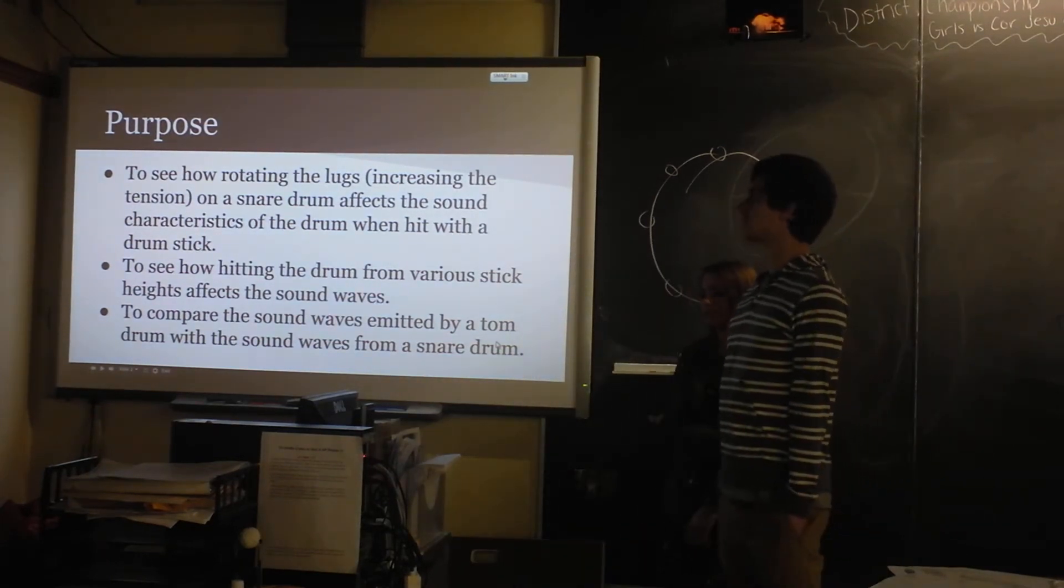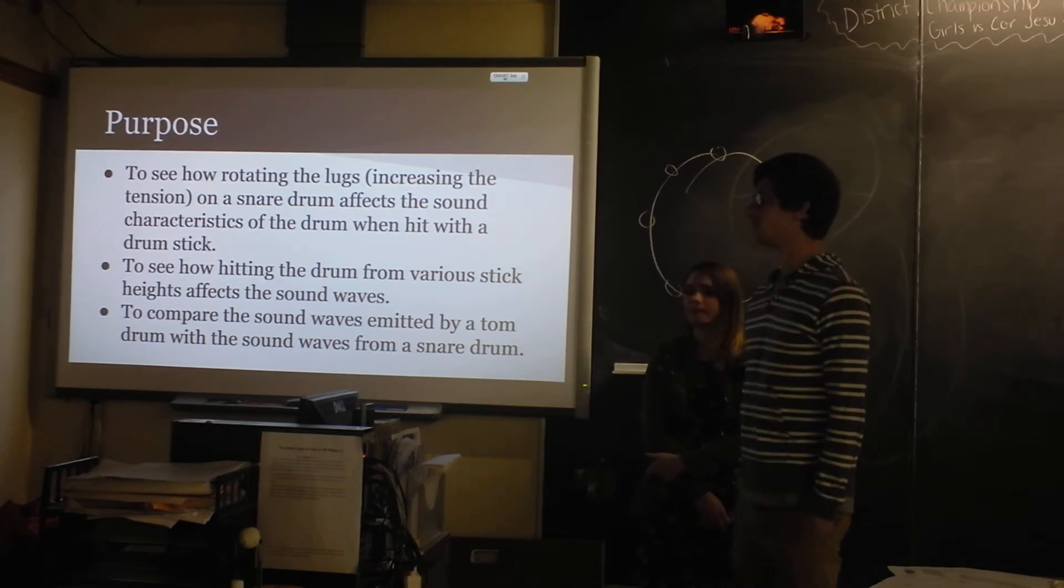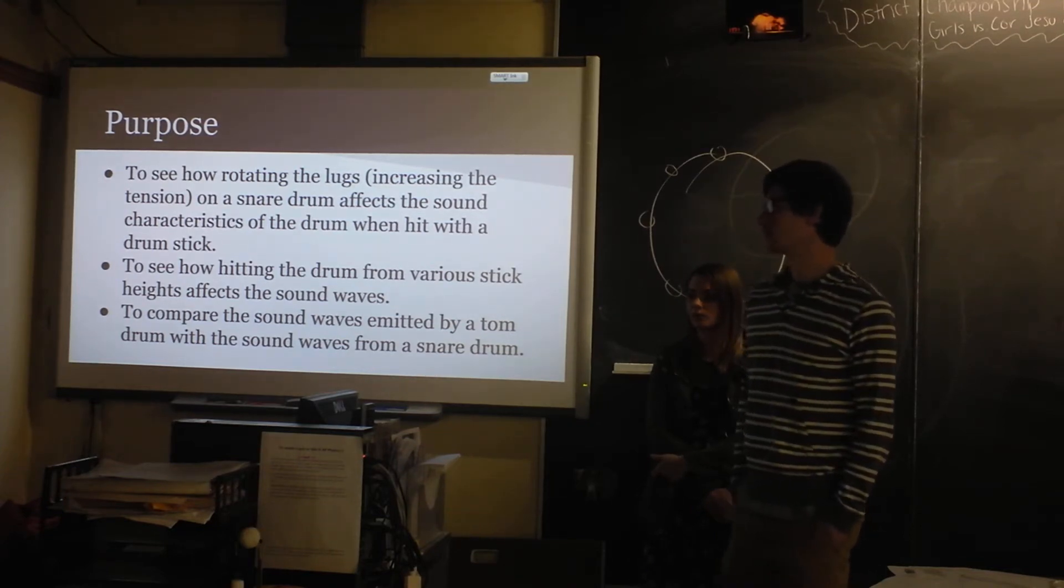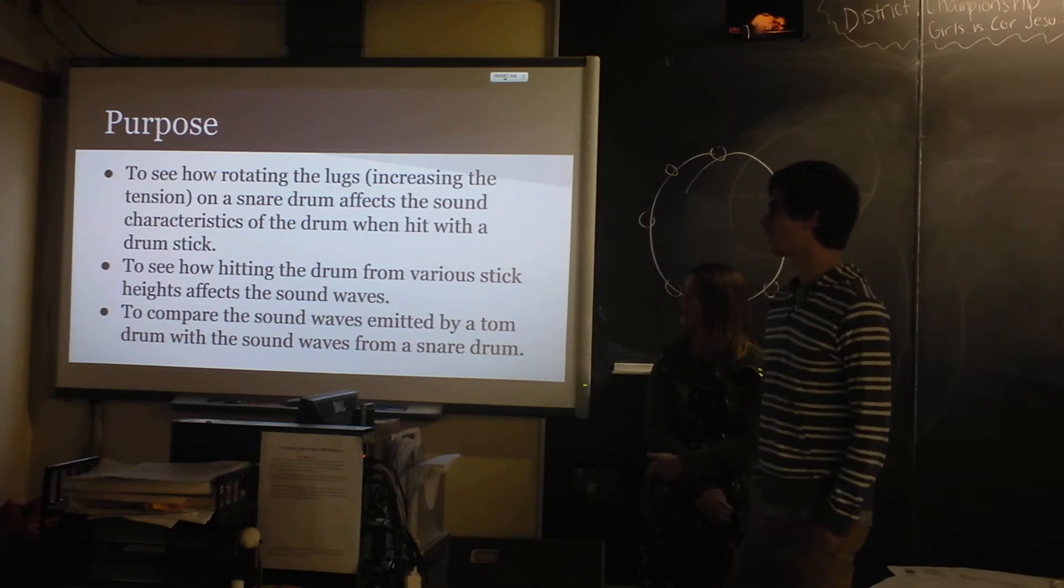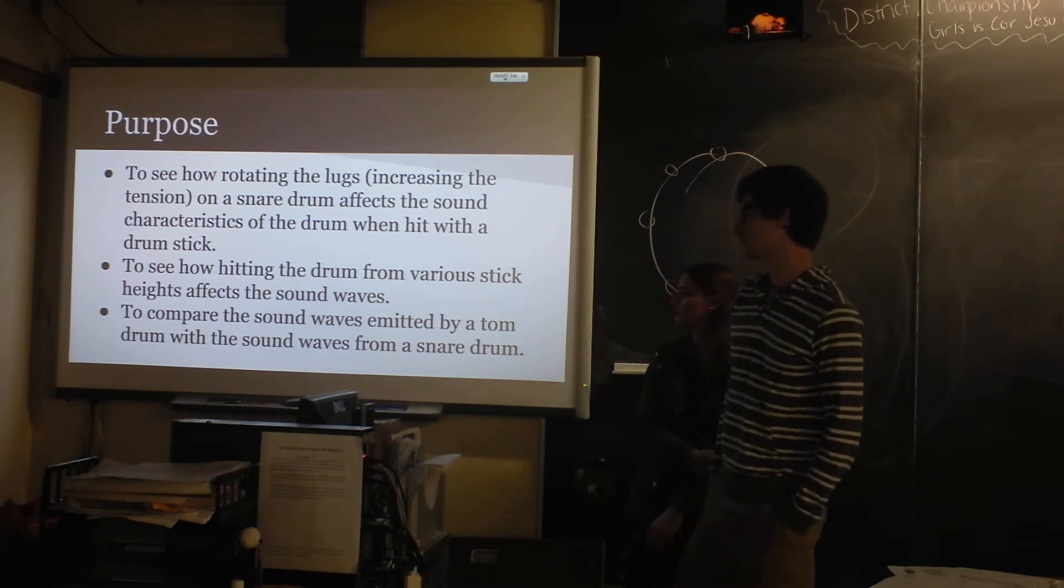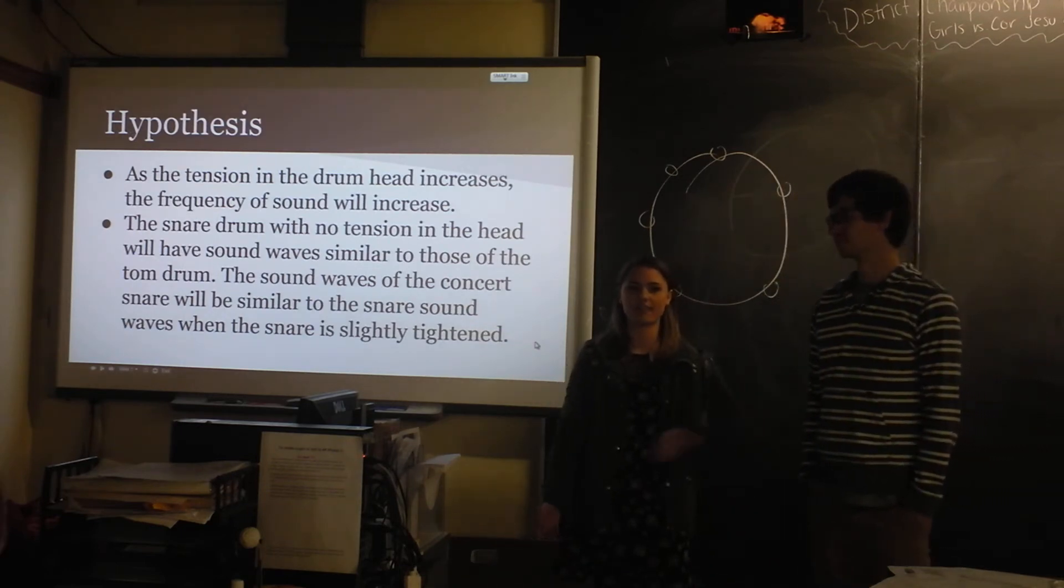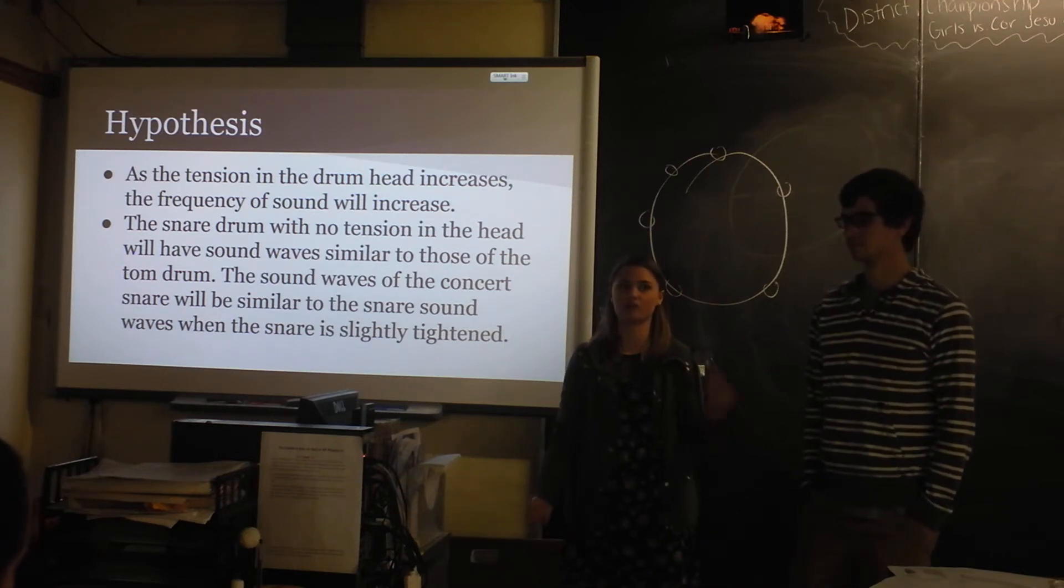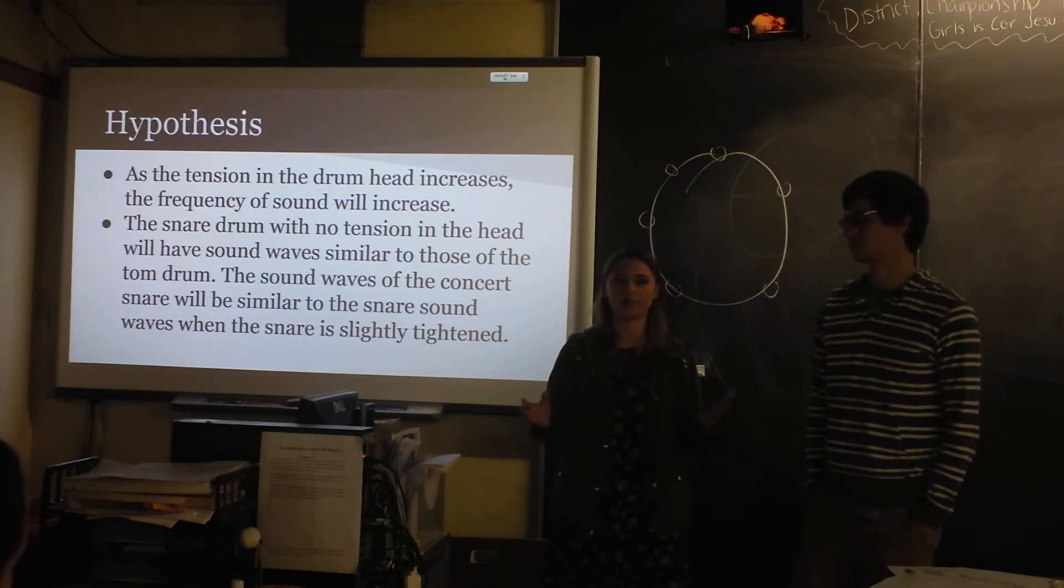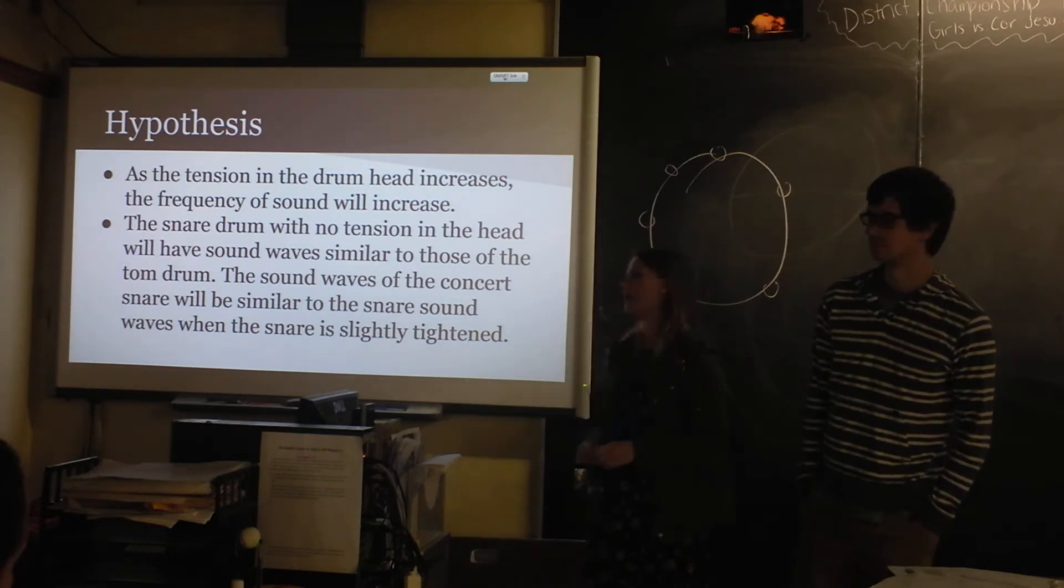The purpose was to see how working the lugs affects the sound characteristics of the drum when you hit it with a drumstick. And then also we looked at how hitting the drum at various stick heights affects the sound waves, and then we compared the sound waves from the snare drum to those from the tom drum. And a tom drum is basically like a snare drum, but there's nothing on the bottom. On a marching snare, there's another drum head on the bottom, and then snares, and that's why it's called snare. But the tom's open, and the head is made of Teflon in snare drums, and it's made of plastic in tom drums, so they sound a lot different.